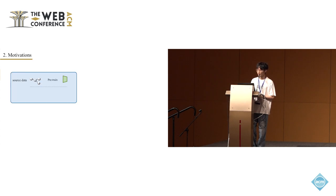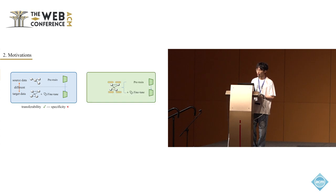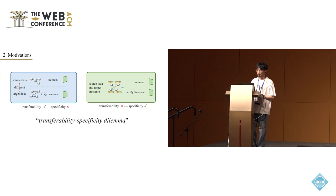To avoid this, some methods focus only on structural information which can be shared across diverse graphs, but doing so might cause us to miss important details. For instance, in graphs about research papers, we might miss what the papers are actually about. On the other hand, some methods designed to pre-train and fine-tune on the same graph can understand all the detailed information. These methods achieve specificity but lose transferability. In summary, existing methods face a transferability-specificity dilemma, which is the difficulty of applying the same method to various graphs while also leveraging the unique node attributes within each graph.